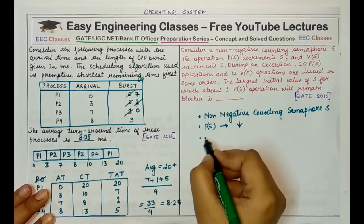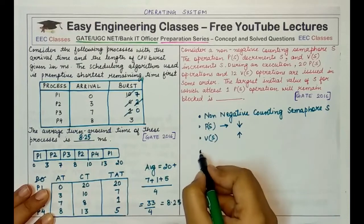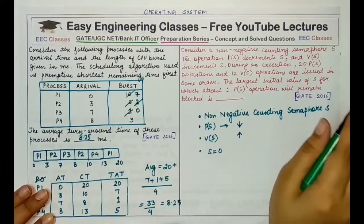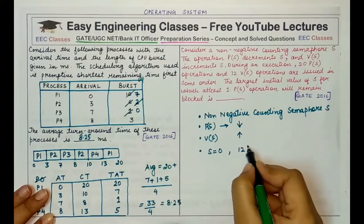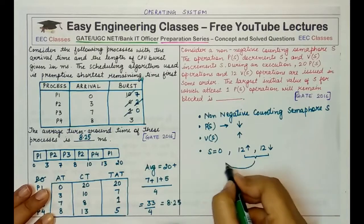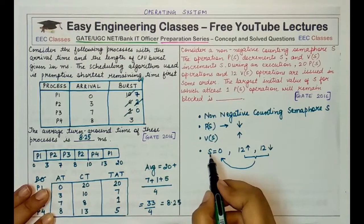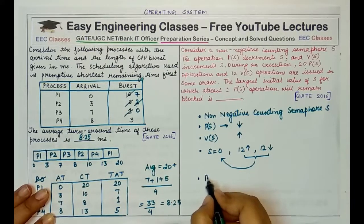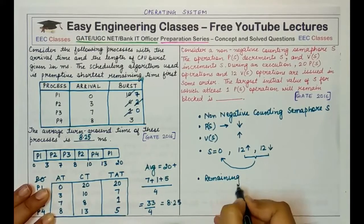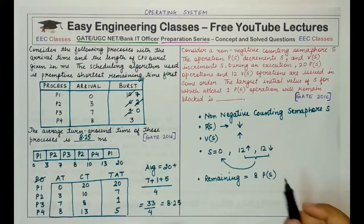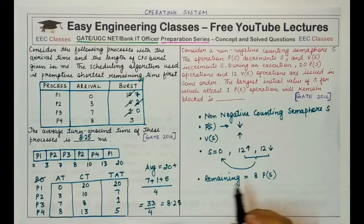If initially S equals zero, the 12 increment and 12 decrement operations cancel out, retaining the value zero. This leaves eight decrement operations remaining. So we need to find the largest initial value of S such that at least one of those eight P(S) operations remains blocked.